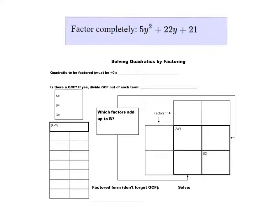So I guess I should write it down. To be consistent with what I've been having you folks do, I'll write it down on this place right here. 5y² + 22y + 21. A is 5, B is 22, C is 21.